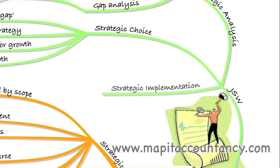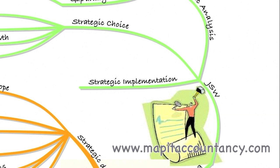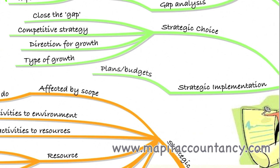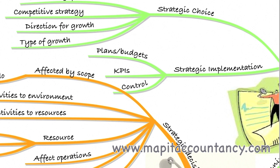Once we've undertaken step one and two — strategic analysis and strategic choice — we can move on to strategic implementation. Once we've identified the strategic choices and decided what we're going to do, we simply need to implement it. For that we'll need plans and budgets, we'll need to set key performance indicators, and we'll need to control how that strategy is implemented. In summary: strategic analysis — where are we? Strategic choice — what could we do? Strategic implementation — implementing what we've chosen to do.